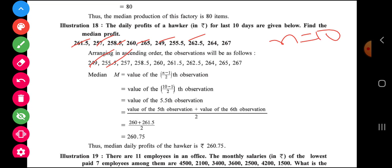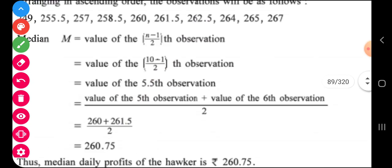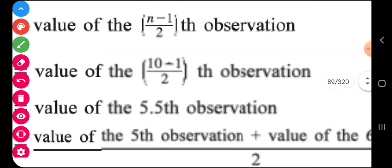249, 255.7, 257, this you all have to observe at your own. Simply copy and so on. So 267 is the highest value. So median is equal to N plus 1 by 2th observation. It is plus side. So N plus 1 by 2th observation.